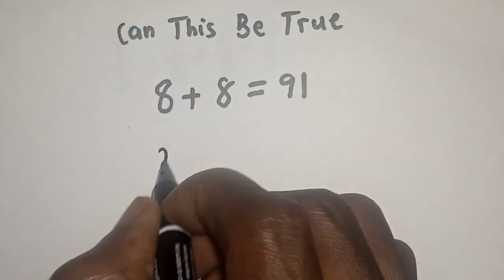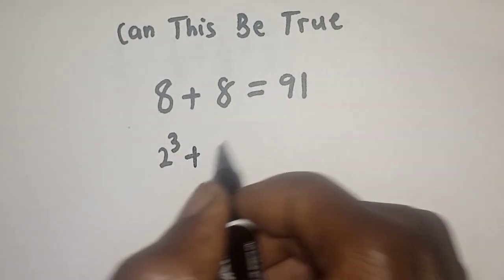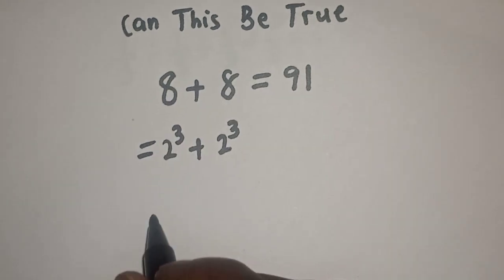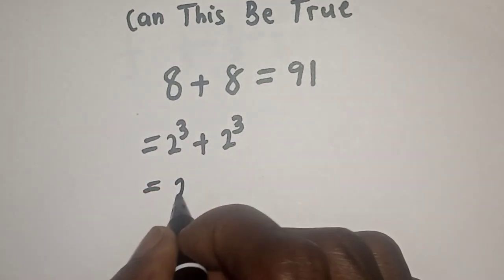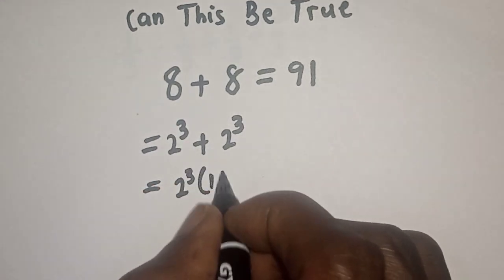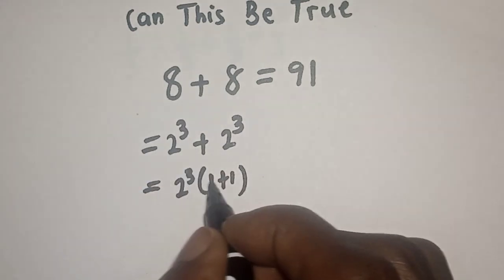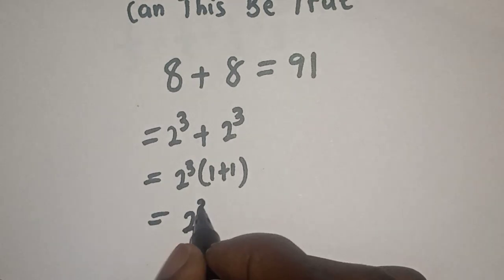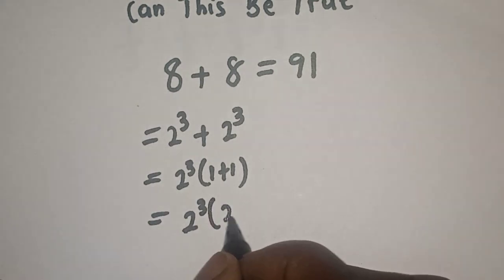Now, take note of this. This is 2 raised to power 3 plus 2 raised to power 3. Then, this is equal to 2 raised to power 3 bracket 1 plus 1 because this divided by this is 1. This divided by this is 1. This is equal to 2 raised to power 3 bracket 1 plus 1 is 2.